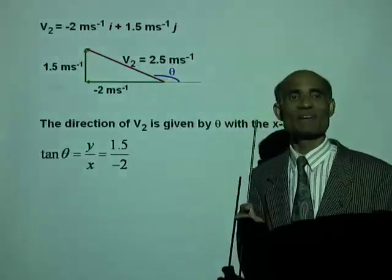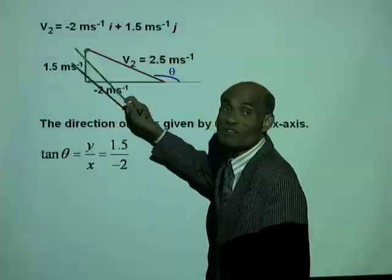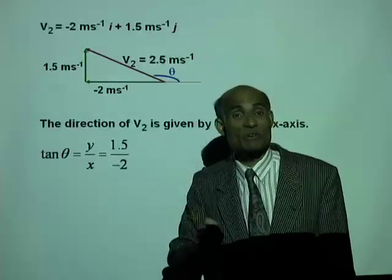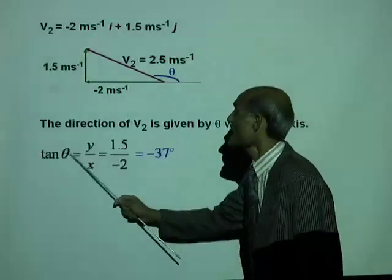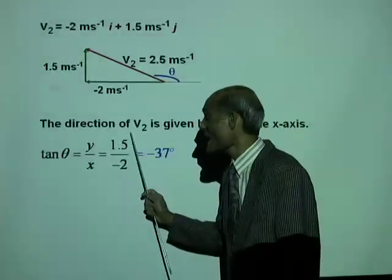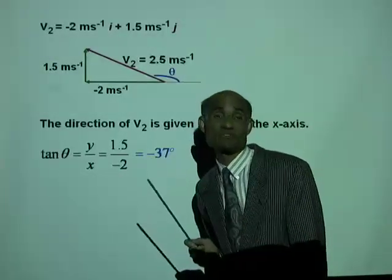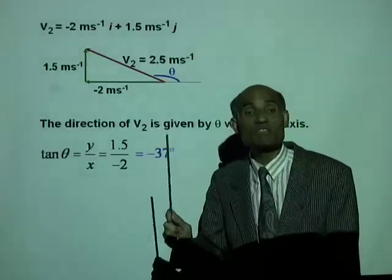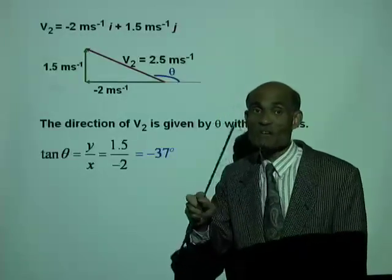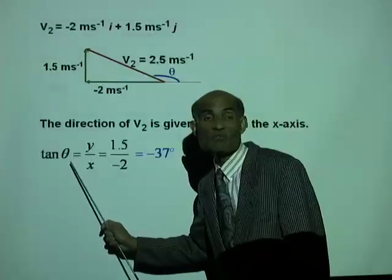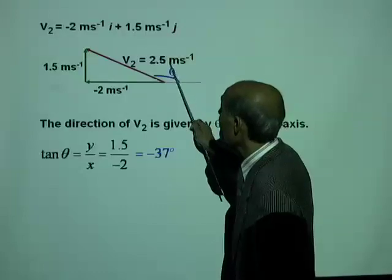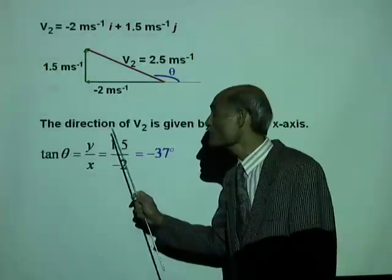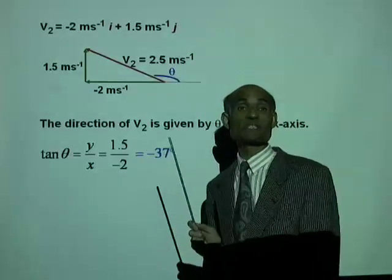That negative sign is very important — it tells us the y value is positive and the x value is negative. Therefore the angle is a second-quadrant angle. Tan inverse of 1.5 divided by negative 2, what does that give you? Tan inverse of 1.5 divided by negative 2 gives negative 37 degrees. Those who understand inverse functions know that tan inverse is defined only in the first and fourth quadrant, so the calculator gave you a fourth-quadrant angle of negative 37 degrees.